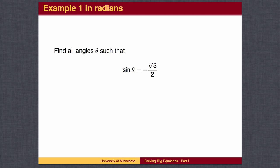We can also do this problem in radians. Again, we find the unit circle values of 4π over 3 and 5π over 3, then add and subtract full circles as many times as we wish.